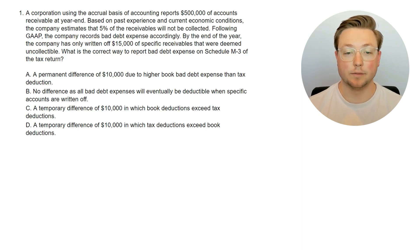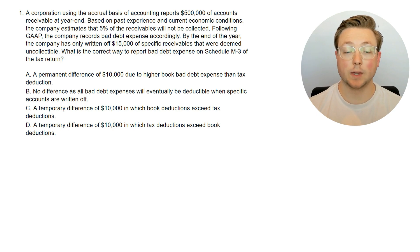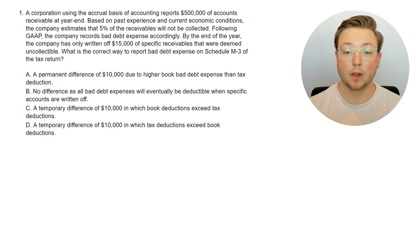Here's question one. A corporation, using the accrual basis of accounting, reports $500,000 of accounts receivable at year-end. Based on past experience and current economic conditions, the company estimates that 5% of the receivables will not be collected. Following GAAP, the company records bad debt expense accordingly. By the end of the year, the company has only written off $15,000 of specific receivables that were deemed uncollectible.